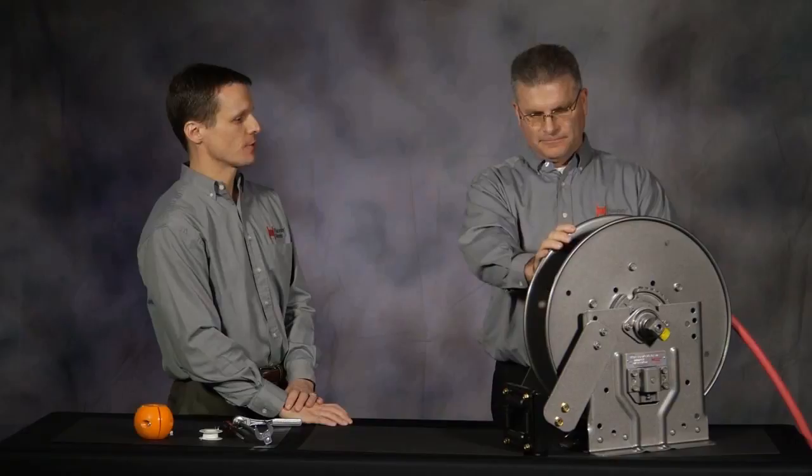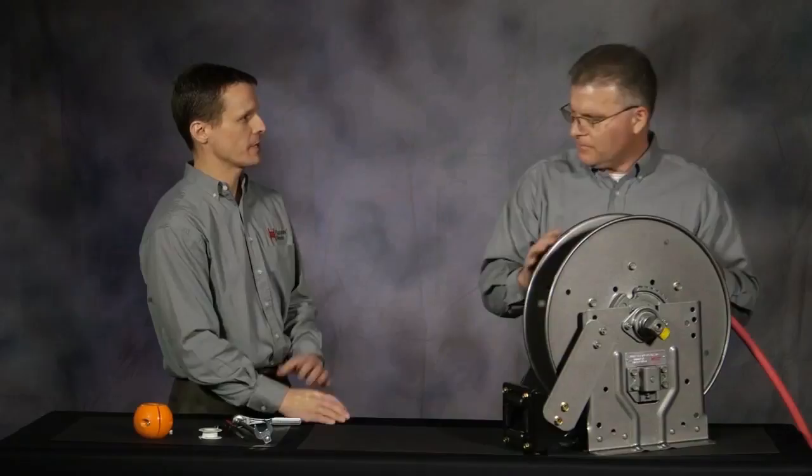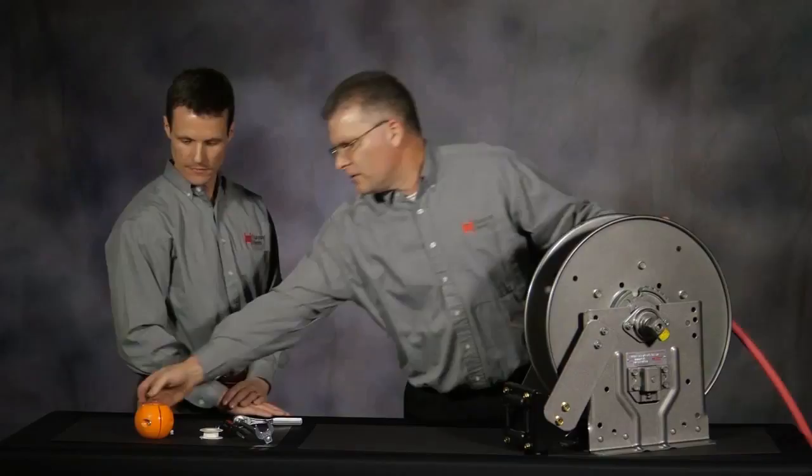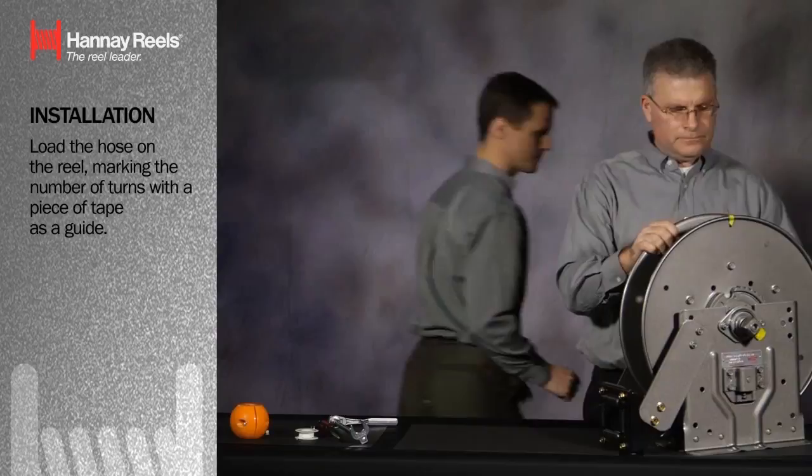So what you're going to do, I assume, is pre-wind the hose on this reel? That is correct. Without introducing tension to the spring motor. That is correct. Okay, let's go ahead and do that. This time we're going to count the revolutions. I'm going to use a piece of tape to cheat with the count so I can keep track easily. And I'm going to go off camera and help you guide the hose in. Does that sound good? Yes, please.